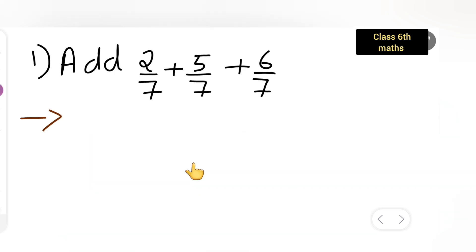First you will write down 2 upon 7 plus 5 upon 7 plus 6 upon 7 as it is. Then write down equals to. As I can see the denominator is the same, what you will be doing is write down...